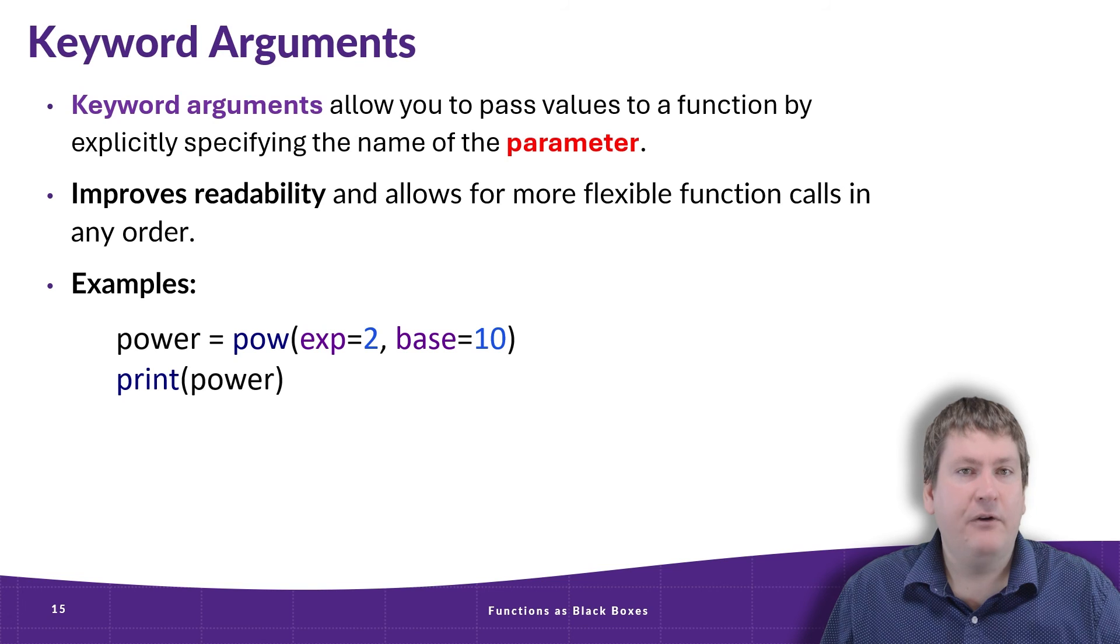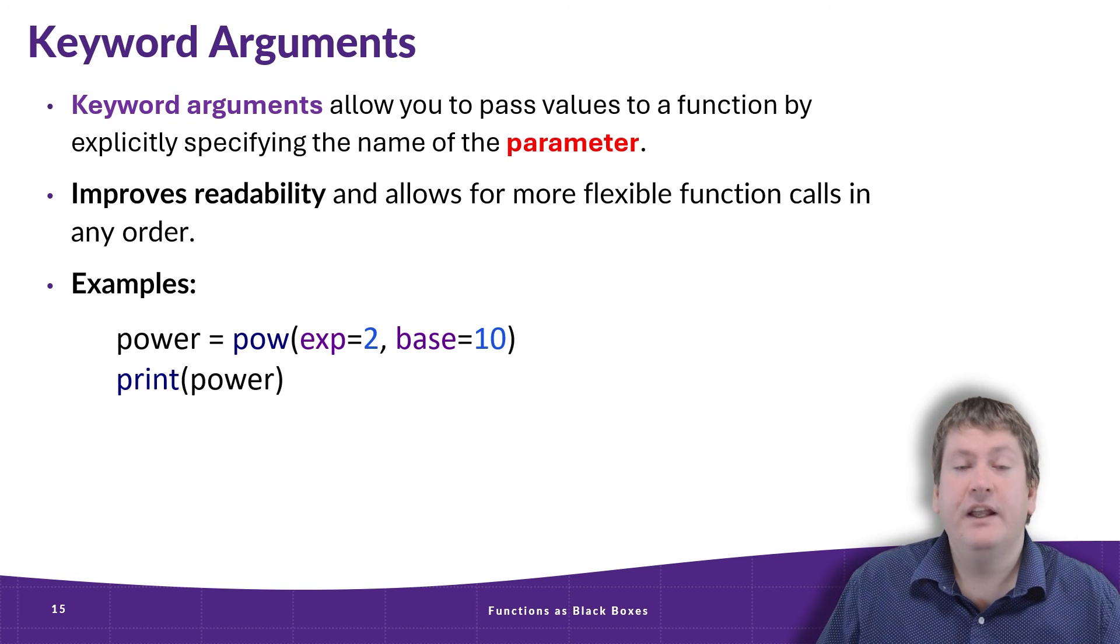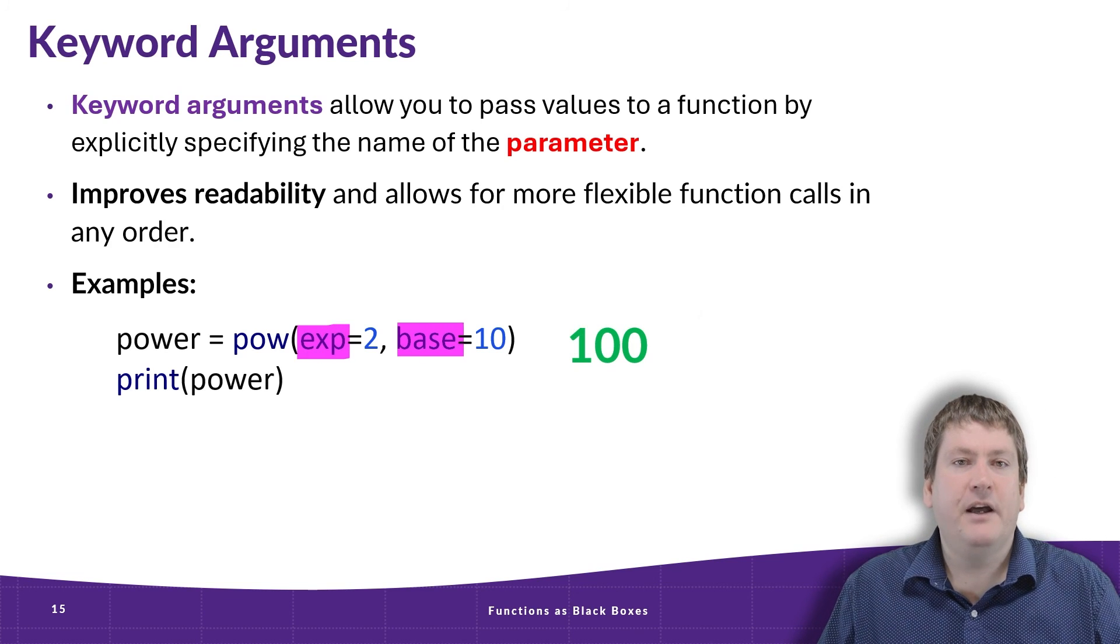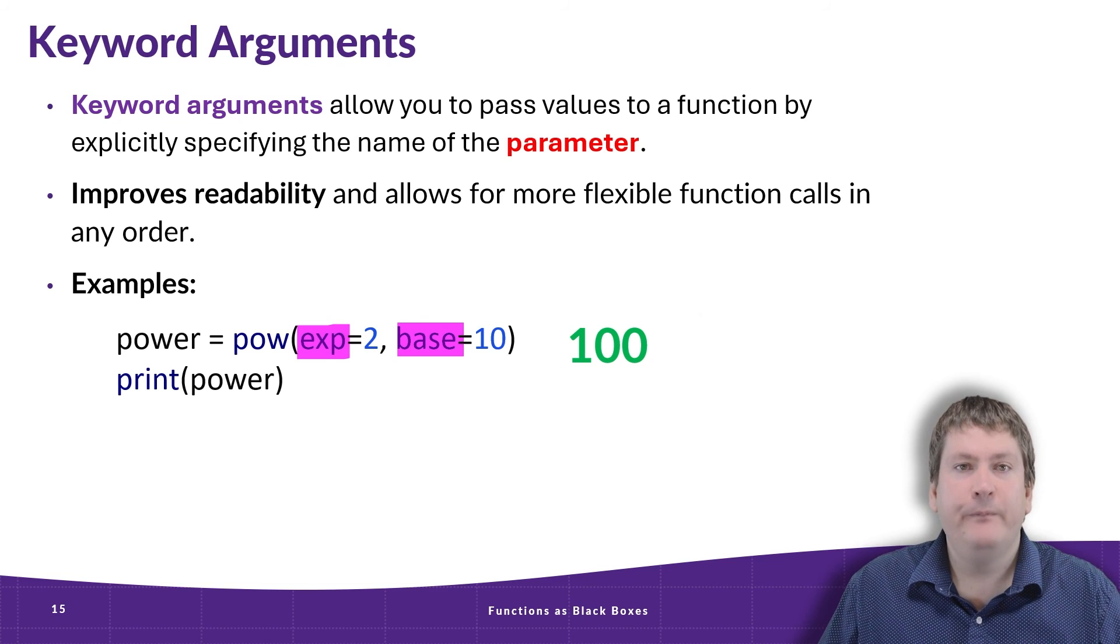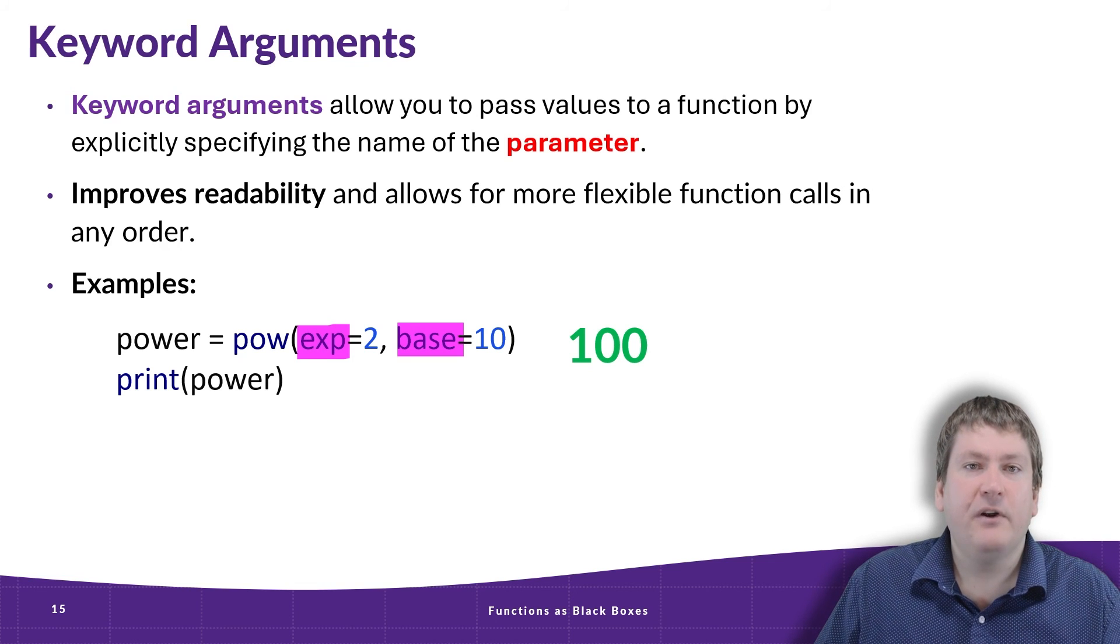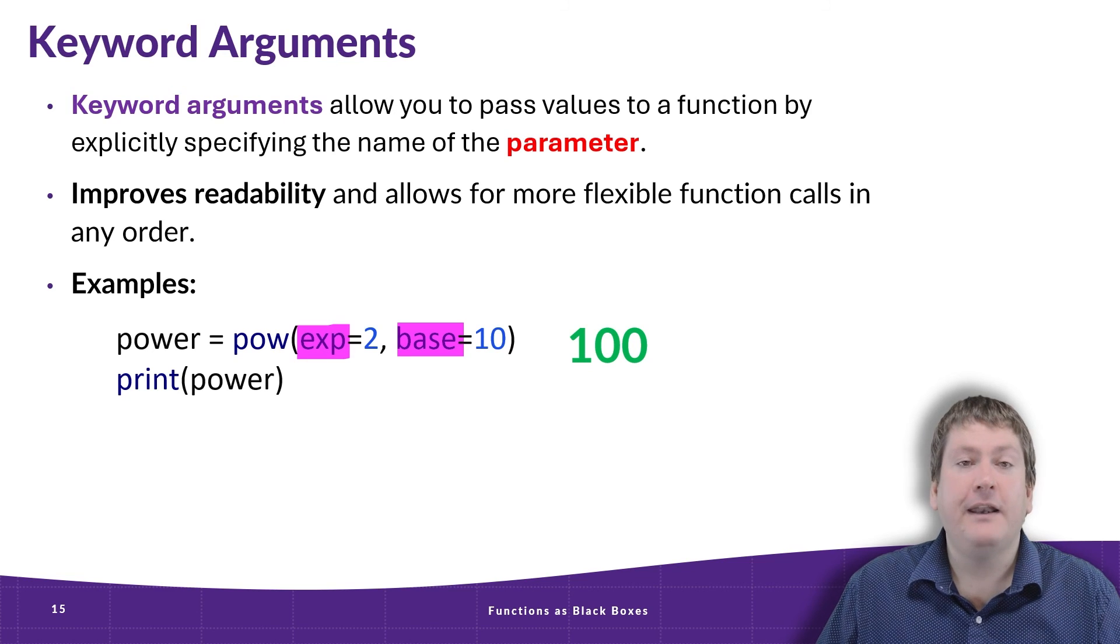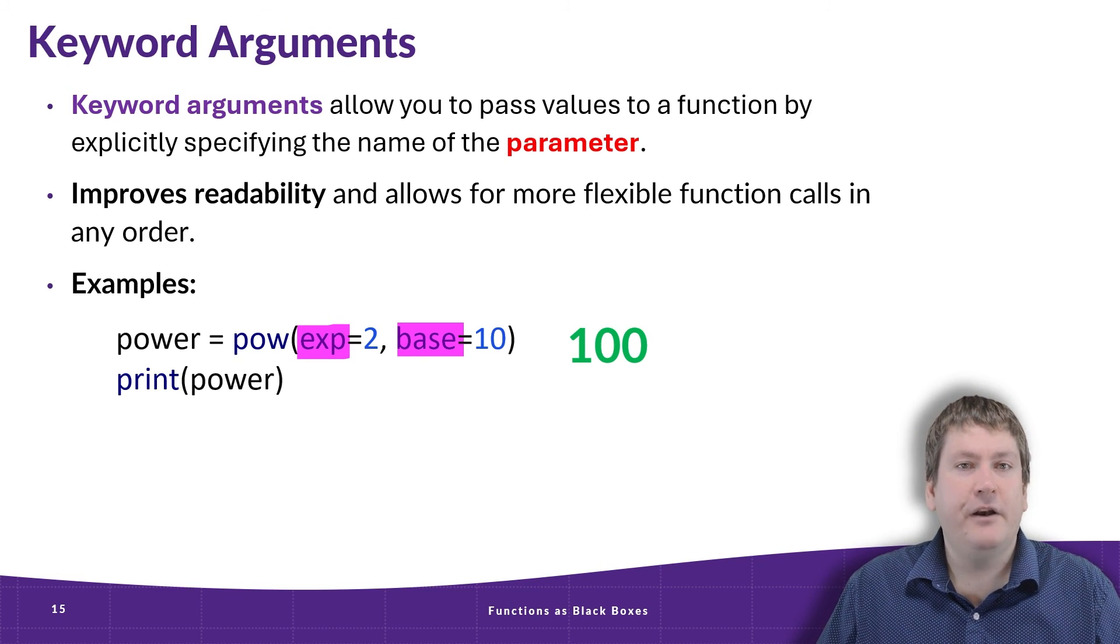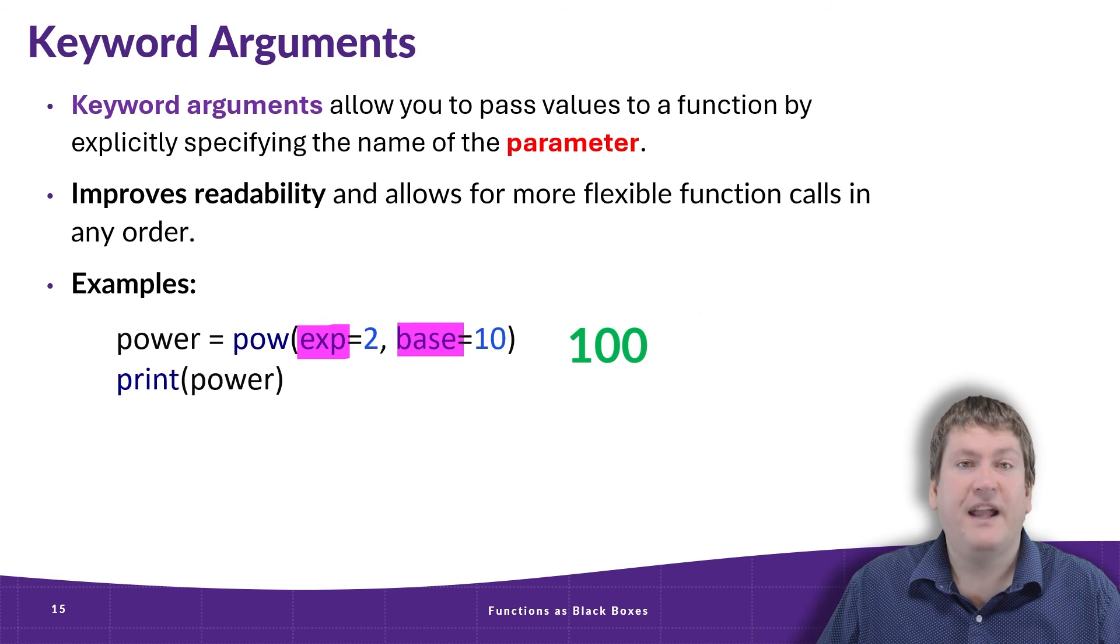And again, we're going to take a look at the pow function. But in this case, maybe we want to provide the exponent first, and then the base. And that's exactly what we're doing in this example. But what we've done is we provided the parameter name before the argument value. And this is why we were able to specify the exponent exp first before the base. So when we provide the parameter name, these can come in any order in our function call. And this makes it a little bit clear to the reader who might not be familiar with the pow function about what these arguments actually mean. They don't have to go to the Python documentation and look it up.